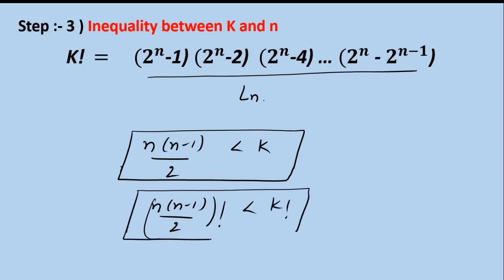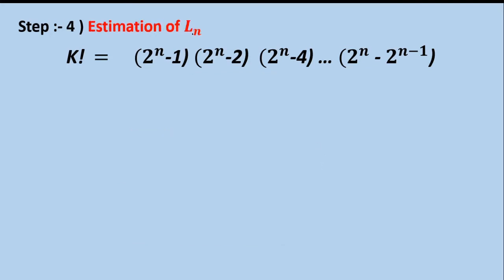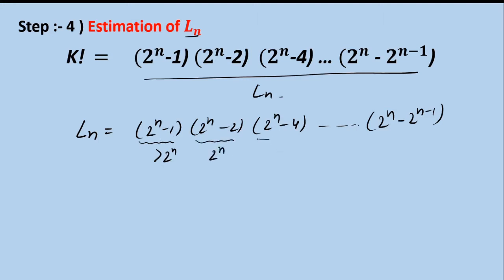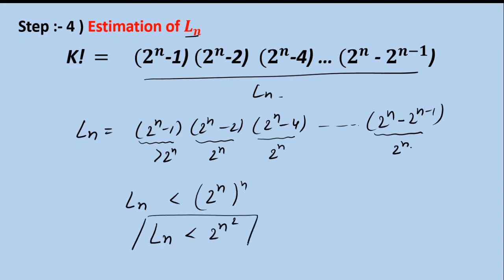Step 4 is estimating capital L(n). Writing L(n) again as the product from 2^(n-1) down to 2^(n - 2^(n-1)), each term is less than 2^n since we are subtracting something positive. There are n terms in the product, so L(n) is less than (2^n) raised to the power n, which equals 2 raised to the power n squared. So I have the estimate: capital L(n) < 2^(n²).